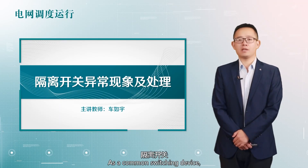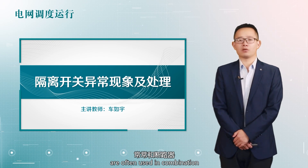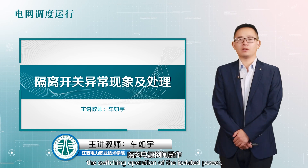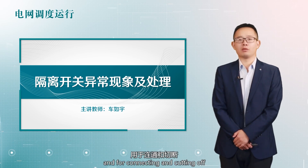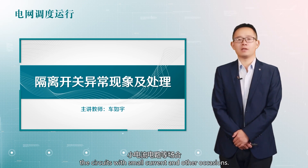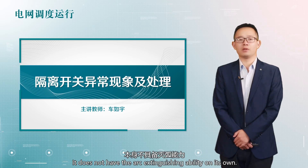As a common switching device, disconnectors are often used in combination with circuit breakers, mainly used for switching operation of isolated power and for connecting and cutting off circuits with small current and other occasions. Disconnectors do not have arc extinguishing ability on their own.